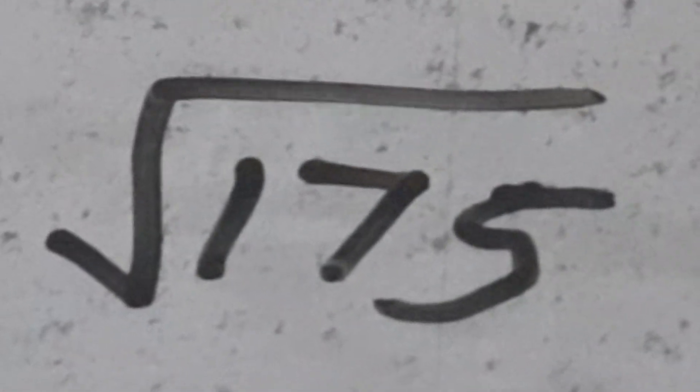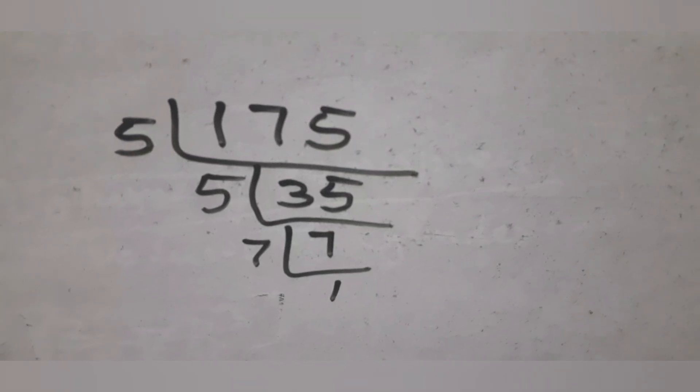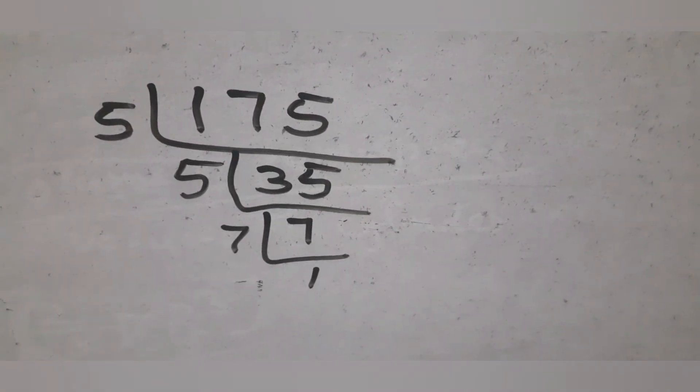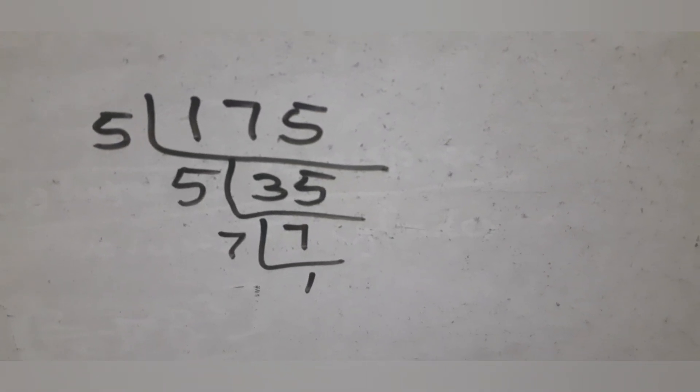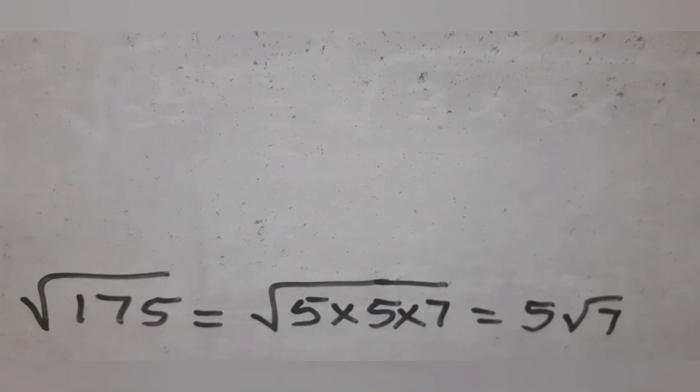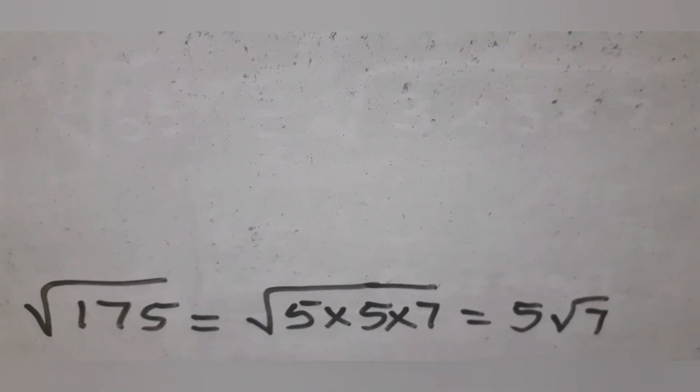The prime factorization of 175 gives 175 equal to 5 into 5 into 7. This means square root of 175 can be written as 5 root 7.